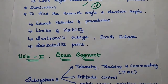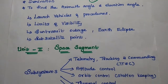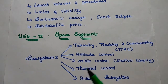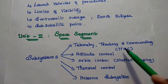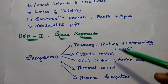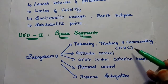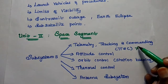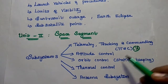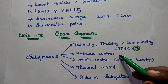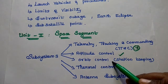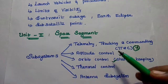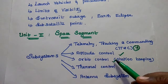The second unit is all about the space segment. In this unit we have different subsystems. The telemetry, tracking, and commanding subsystem is an important one. Similarly, attitude control as well as orbit control — these three topics are very important.